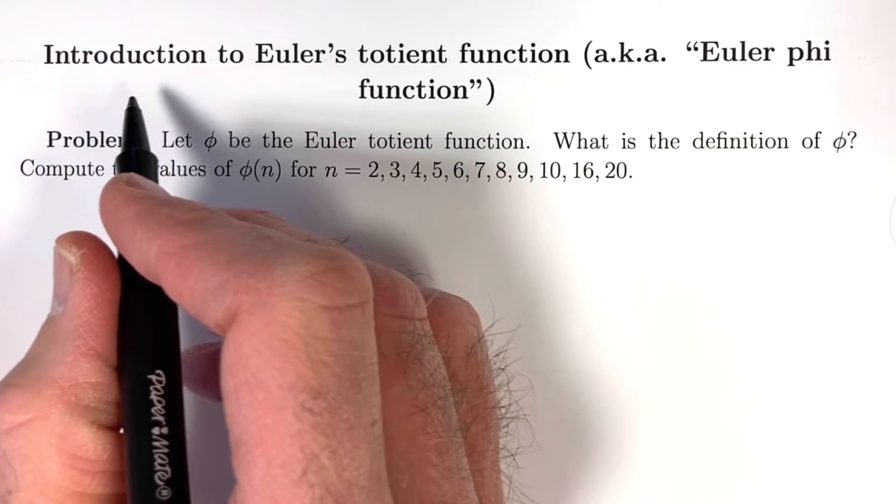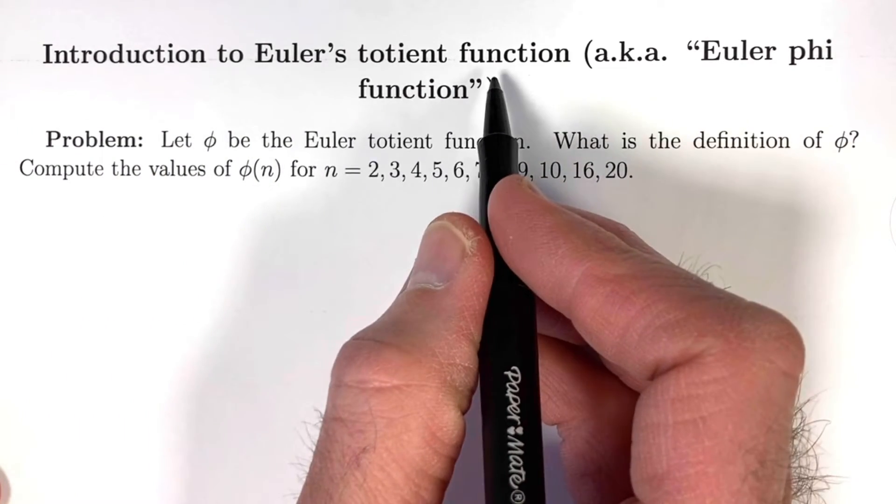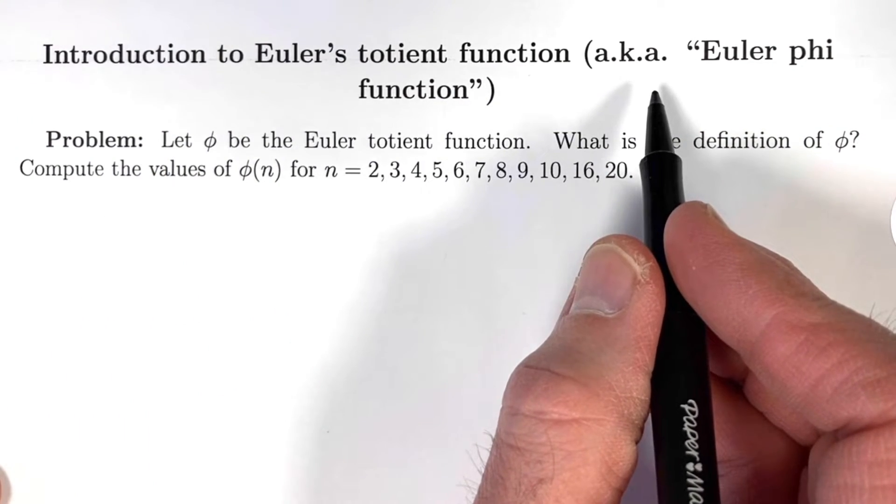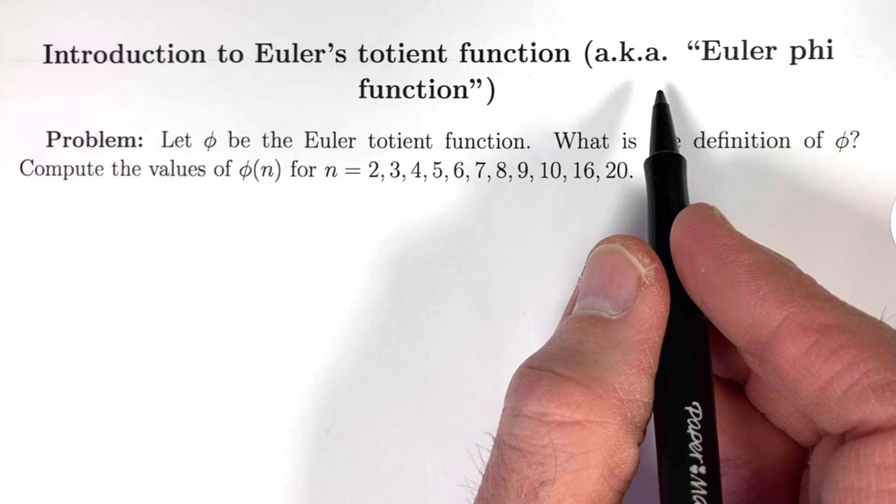Euler's totient function is a fundamental tool in both number theory and abstract algebra, but what is it and what are some of its values? This is an introduction to Euler's totient function, also known as the Euler phi function.